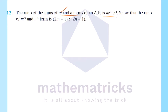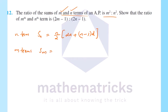We will find the sum of n terms of an AP. Sn is equal to n by 2 into 2a plus n minus 1 into d. This is the sum of n terms. Now we will write the sum of m terms: Sm equals m by 2 into 2a plus m minus 1 into d.